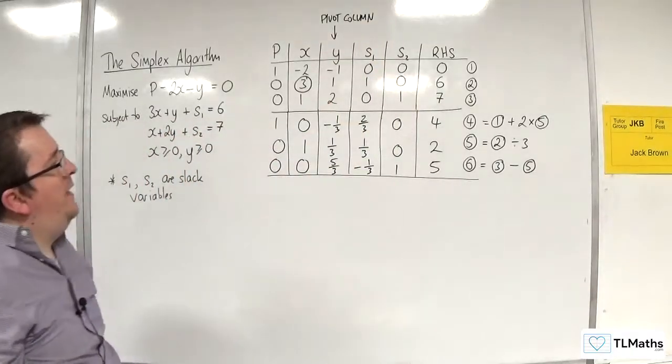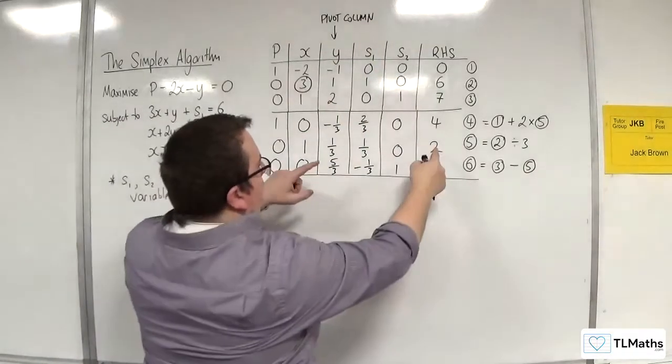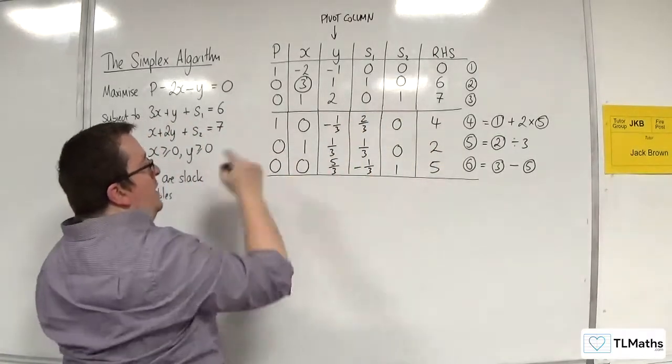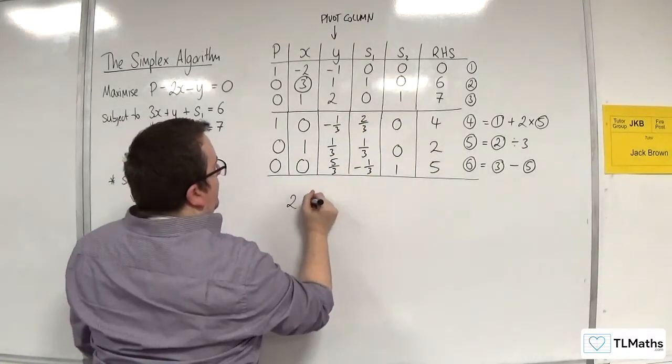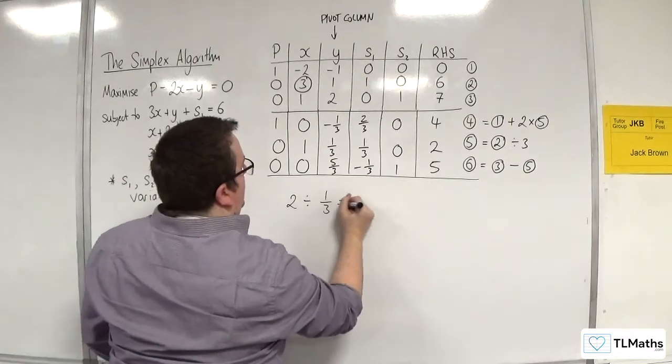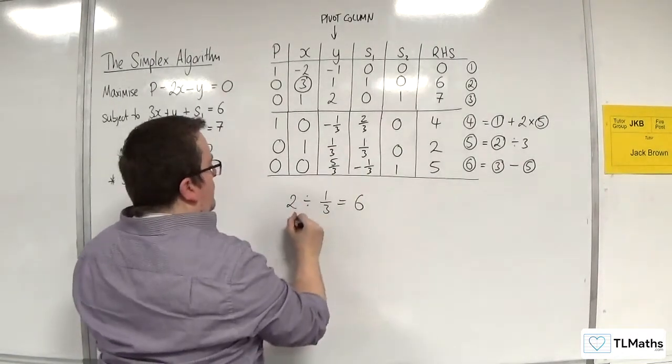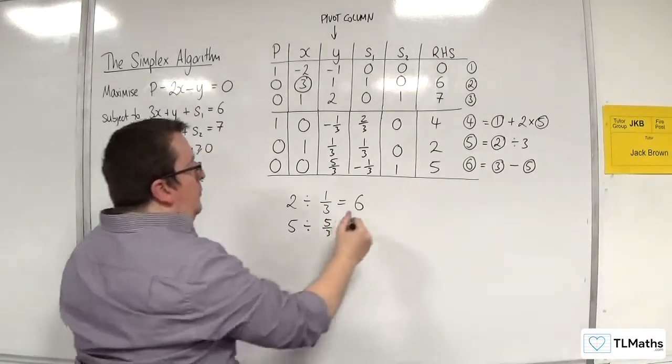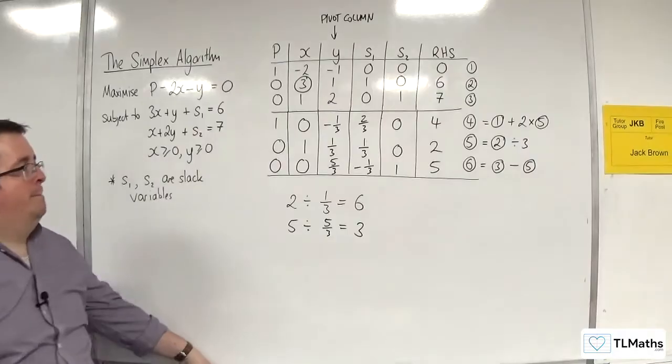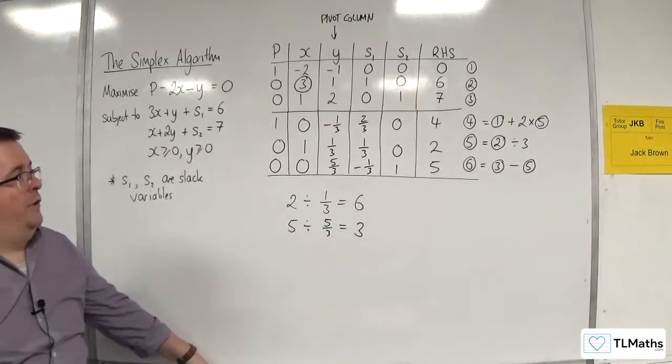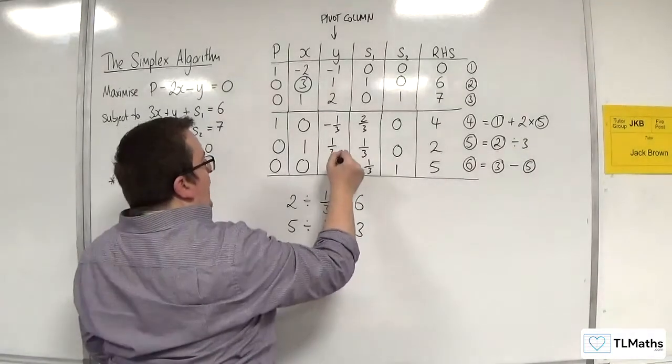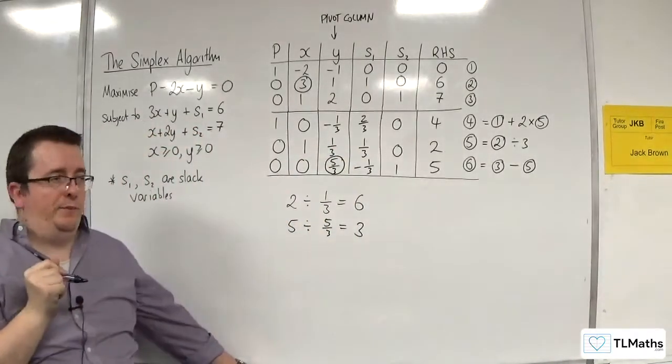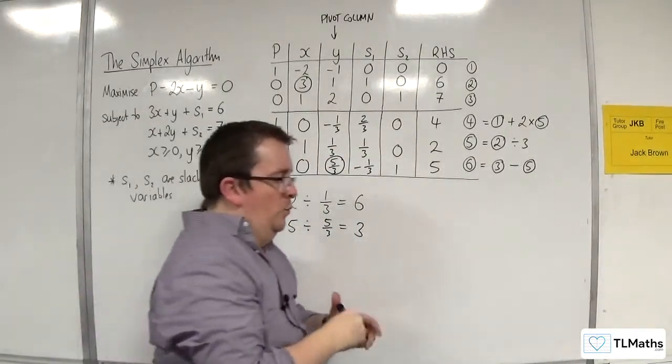So I look down that column and I'm going to have the right-hand side divided by each element in the Y column. So 2 divided by 1 third is 6, and 5 divided by 5 thirds is equal to 3. So that means that this value is going to be my pivot, which I circle.